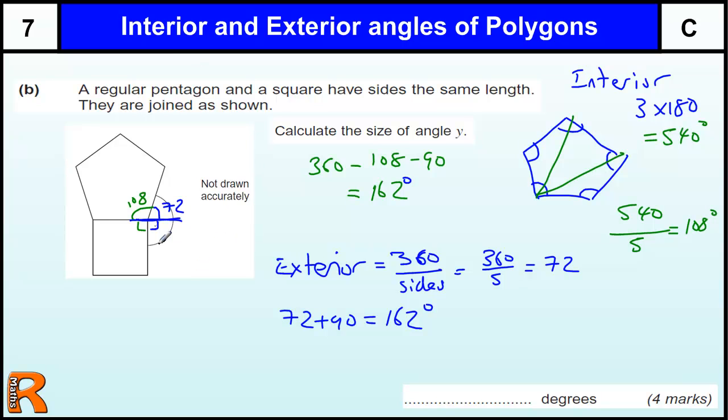Now, the most common mistakes here are people mixing up their interior and exterior. If you think about it, if you know one or the other, you should be able to get the right one because, although this is not drawn accurately, you can still see that this angle here is greater than 90, and this angle is less than 90.